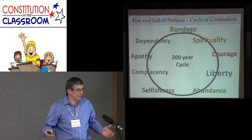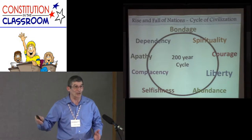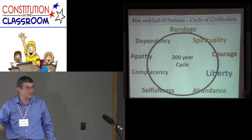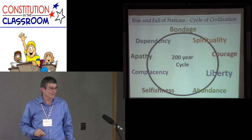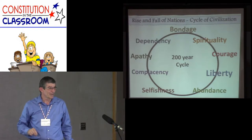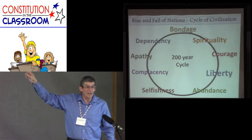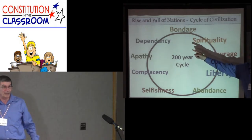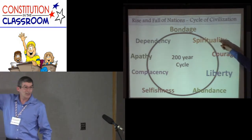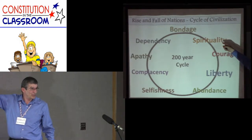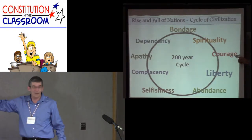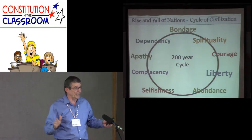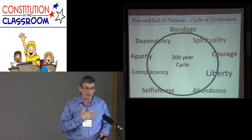When you understand this cycle and what it takes to move past or shorten each stage, how do you shorten dependency and bondage? You have to look ahead. If you want to shorten the periods of dependency and bondage, you have to get to spirituality as quickly as you can for the people as a whole. If you can do that, then the courage to do the right things will be next. So how long we'll be in each of those stages is up to us as a people.